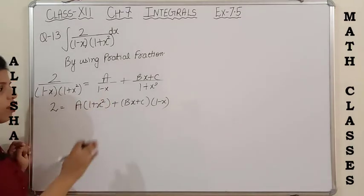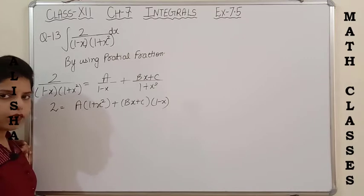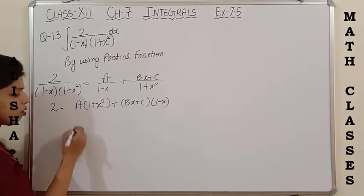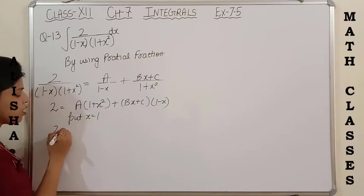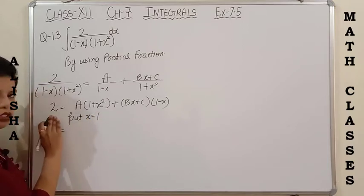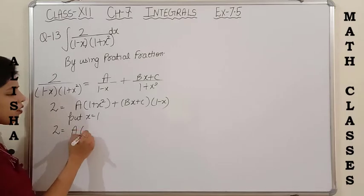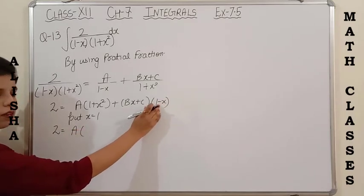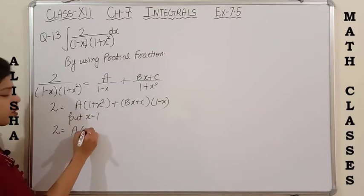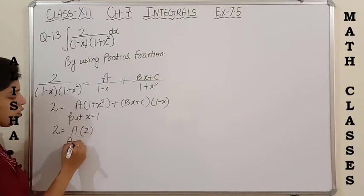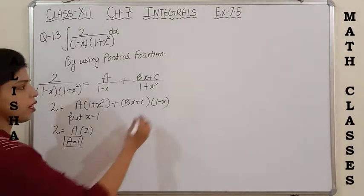For the first factor, when 1 minus x equals 0, we get x equals 1. Putting x equals 1 in the equation: the left-hand side remains 2. On the right-hand side, the first term becomes 0 because (1 minus 1) is 0. Then (1 plus 1) equals 2, so we get the value of A equals 1.